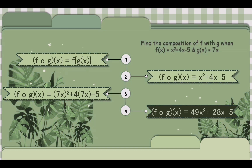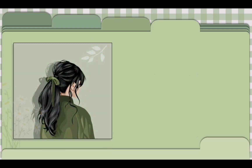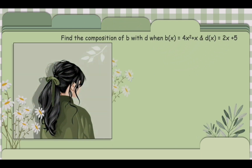Example number 4. You may have noticed it's b of x and not f of x. Don't worry and don't get confused, for they are just the same — it is just the letters which are different. To find the composition, b of x is equal to 4x squared plus x, and d of x is equal to 2x plus 5.